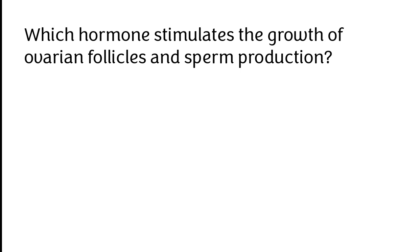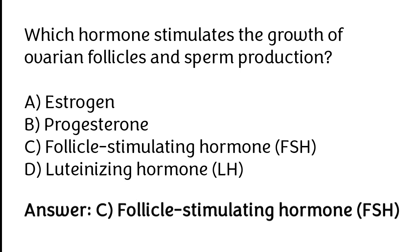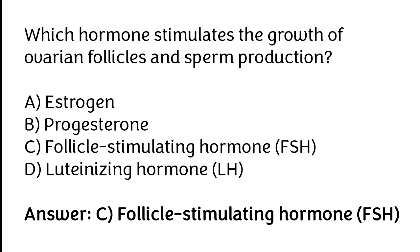Which hormone stimulates the growth of ovarian follicles and sperm production? Estrogen, Progesterone, Follicle-stimulating hormone, Luteinizing hormone. The correct answer is Option C — Follicle-stimulating hormone (FSH) stimulates the growth of ovarian follicles and sperm production.